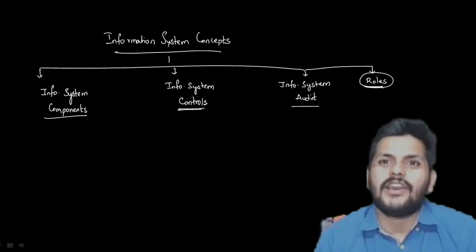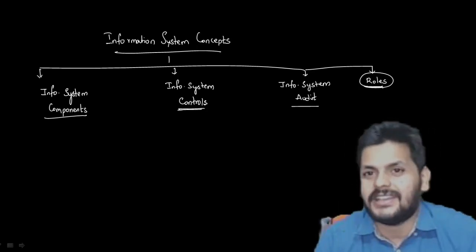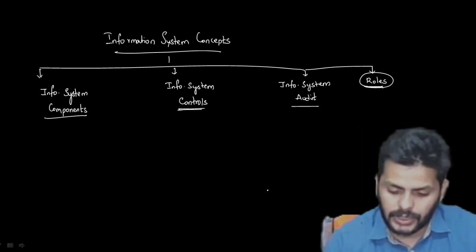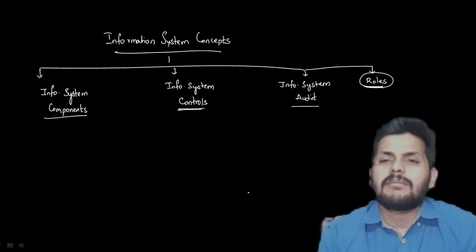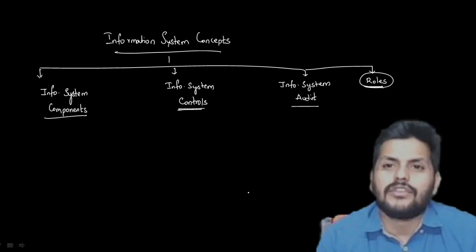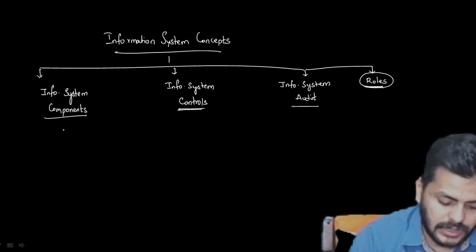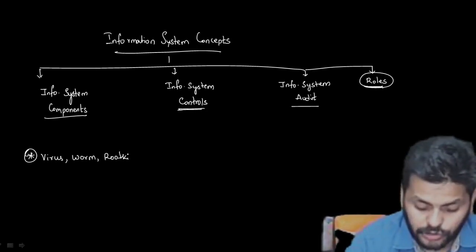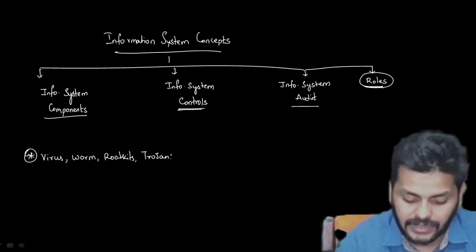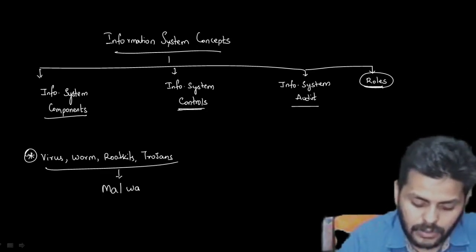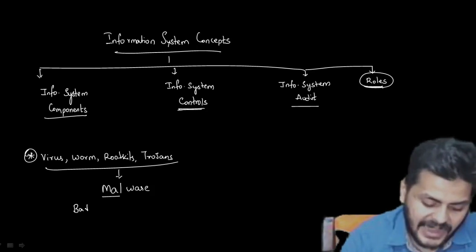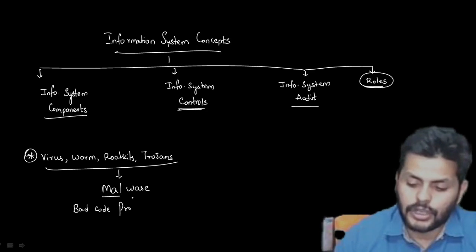Sometimes you get emails saying 'click here to win' — if only life was so easy. There are lots of malware. Malware means a bad-coded program. Trojans, rootkits, viruses, worms — these are all different sorts of viruses with different agendas, and they are all called malware. The word 'mal' stands for bad, and 'ware' as in software. Malware is a bad-coded program — the intention is to do something wrong.